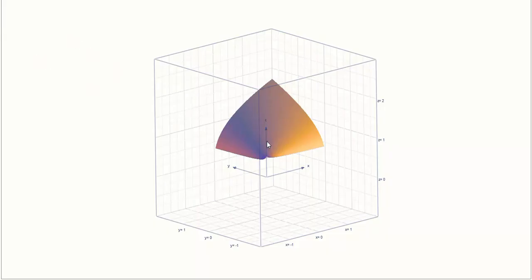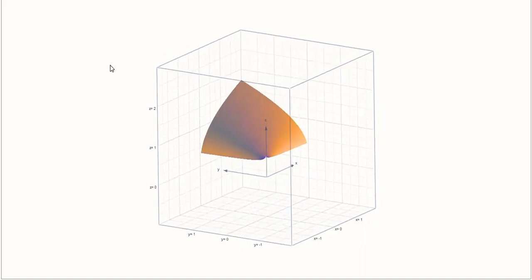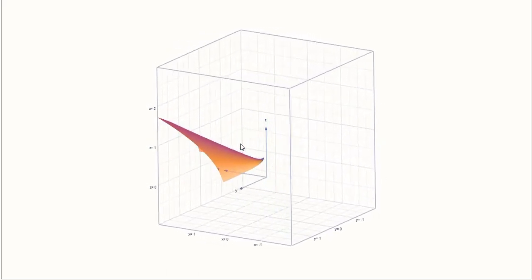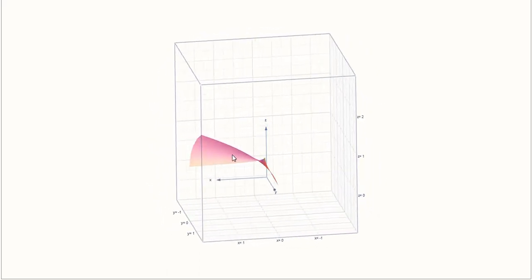So here we are, we have plotted this and you can see that it's a surface. It has 3D orientation and this is the output, this is labor, and this is capital. So now let's rotate it a little bit and see how it looks like.